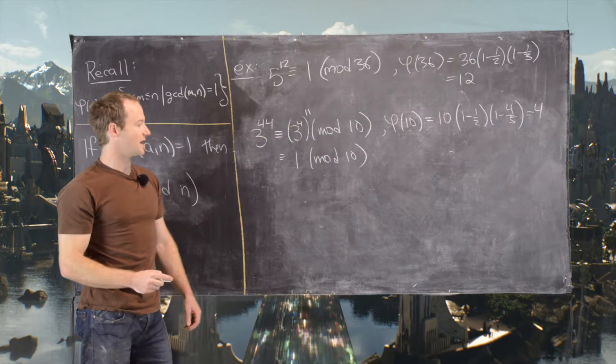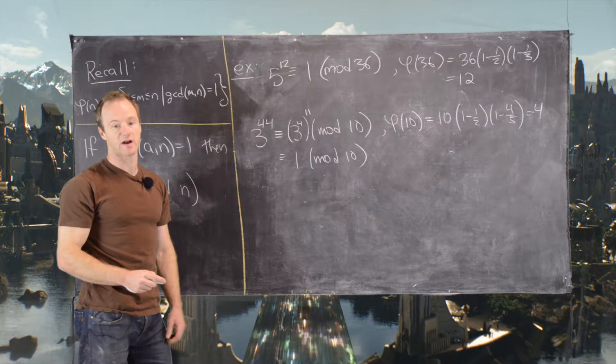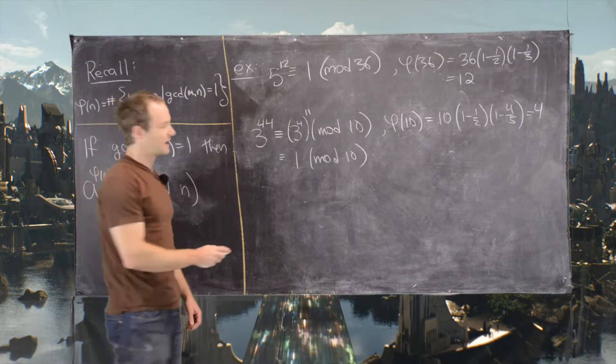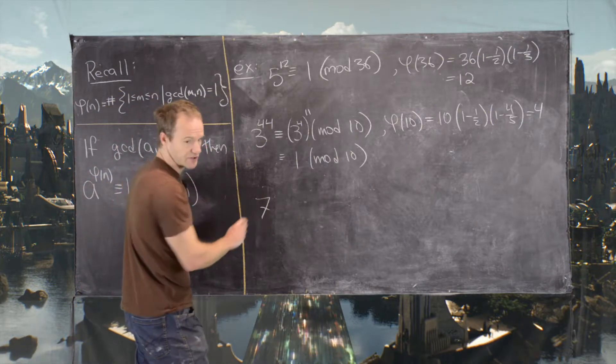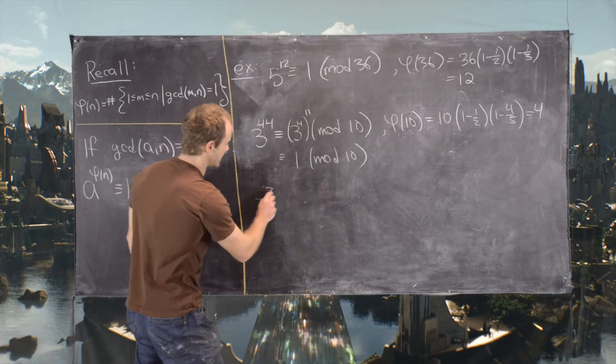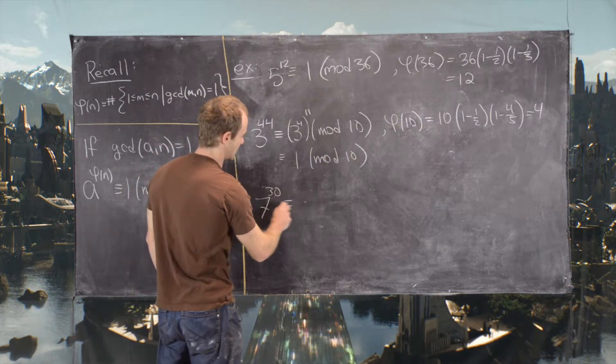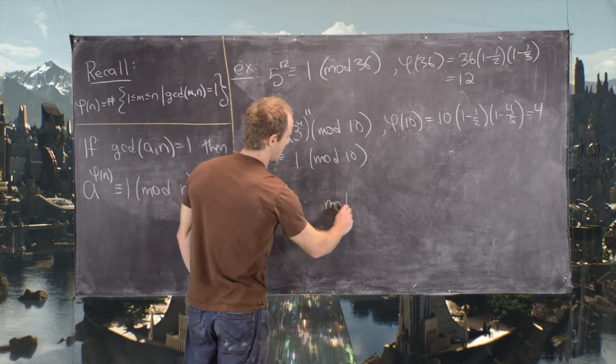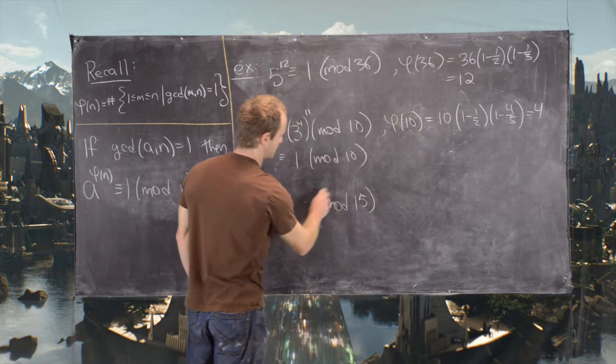So let's look at another small example and then we'll look at a bigger example. So let's look at 7 to the 30 is congruent to something mod 15.